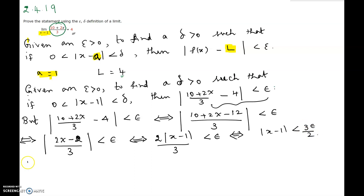So we have to choose our delta in such a way that when |x - 1| < delta, then |(10 + 2x)/3 - 4| < epsilon. Looking at the statement, |x - 1| < 3epsilon / 2 suggests that if we choose delta to be less than or equal to 3epsilon / 2, then this condition will be satisfied.